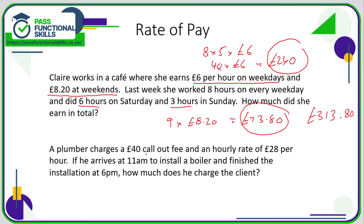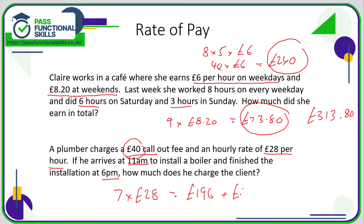A plumber charges £40 for the call-out and £28 per hour. If he arrives at 11 and finishes at 6, that means he's done 7 hours. So 7 lots of 28 comes to a total of £196. But he'll also charge the call-out fee — it doesn't matter how long he's working, he'll always charge £40 whether he's there for one minute or the whole day. So we just need to add that onto the £196, and we get the grand total of £236.